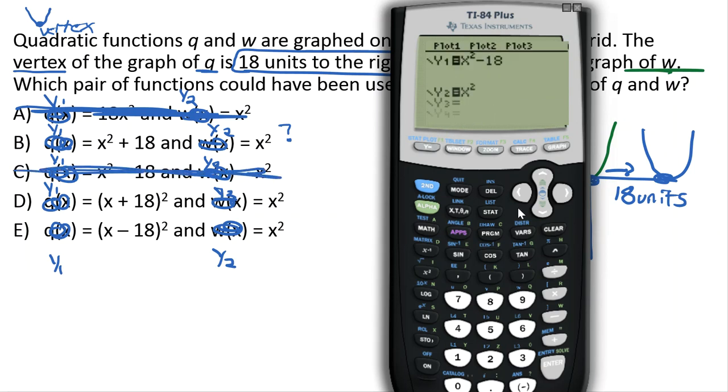What about (x + 18) squared? So let's do (x plus 18) squared. Okay, so x and the 18 are both in the parentheses, and it's squared. Let's press graph. There's our x squared, which is our second graph, and the other one doesn't show up 18 units to the right. So it doesn't look like that one's it either.